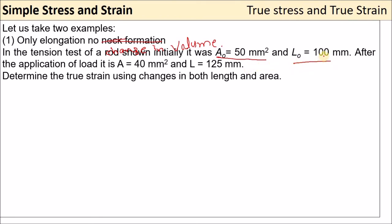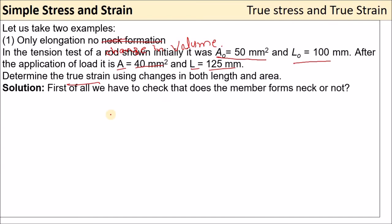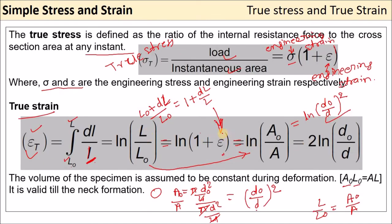After the application of load, the new area A = 40 mm² and new length L = 125 mm. Determine the true strain using both length and area formulas. First, we check for volume constancy: A₀L₀ = AL? If correct, we can use any formula.